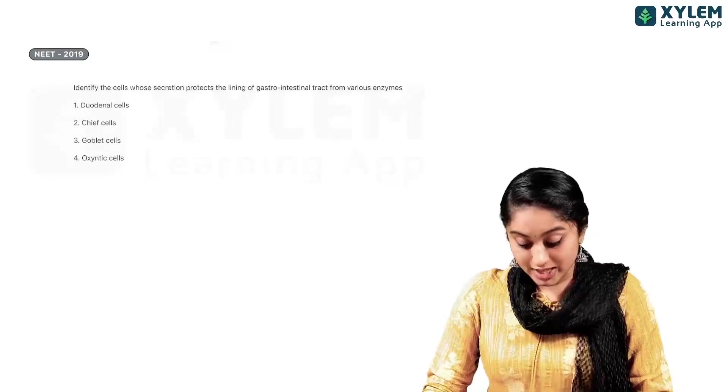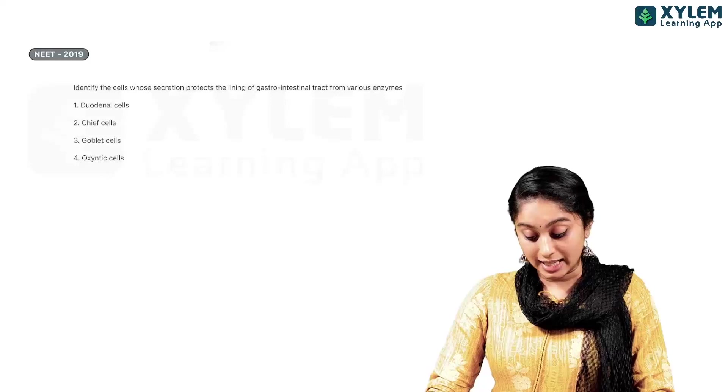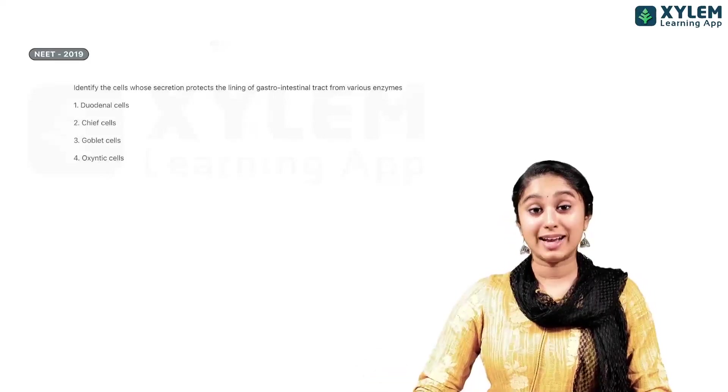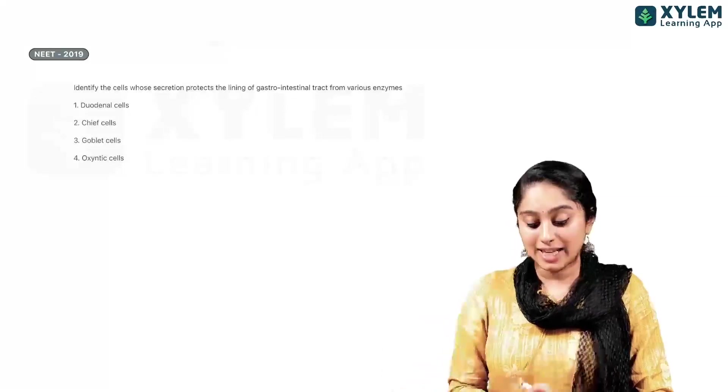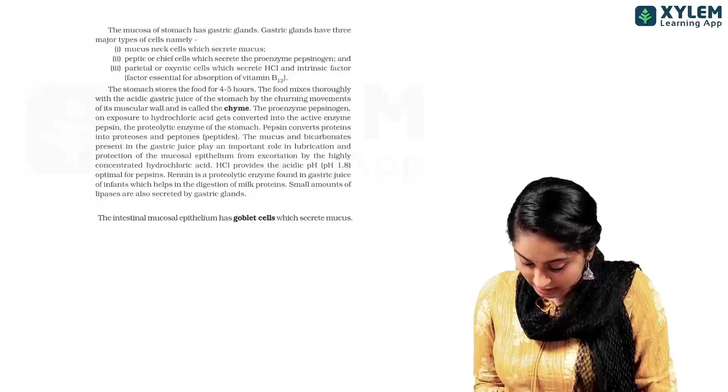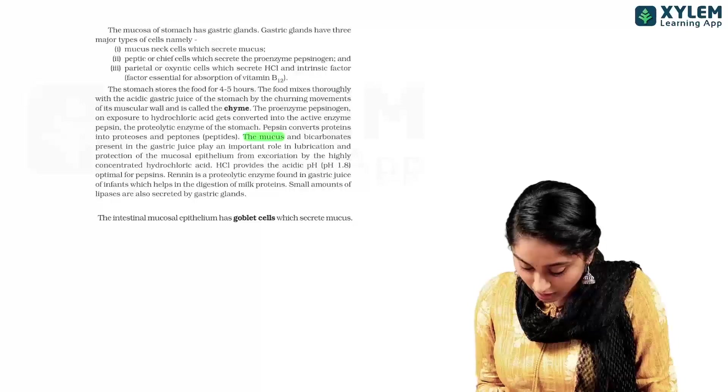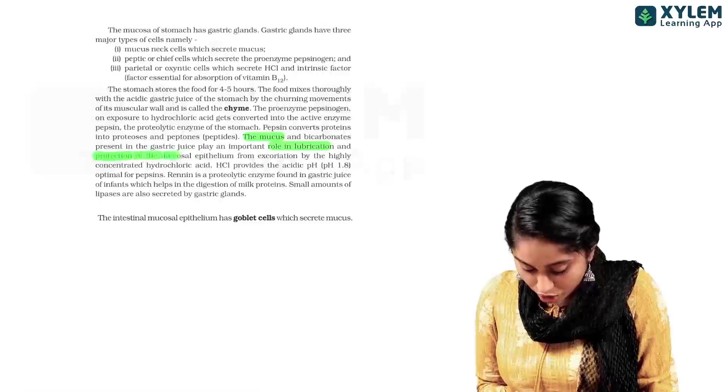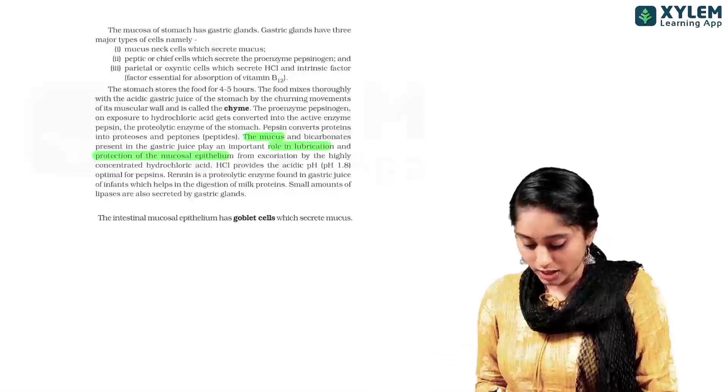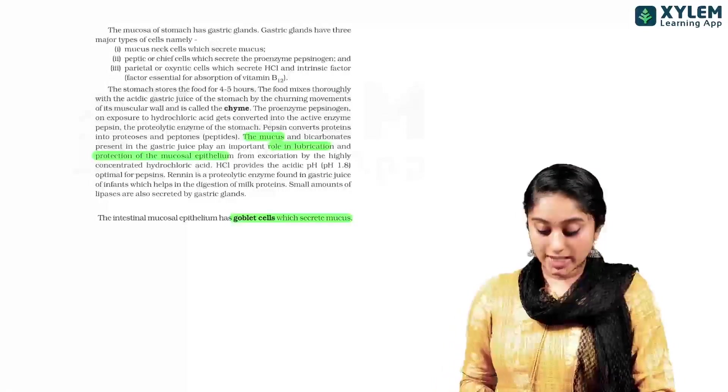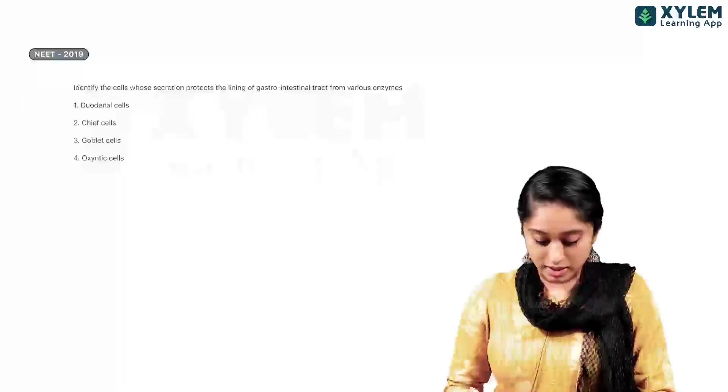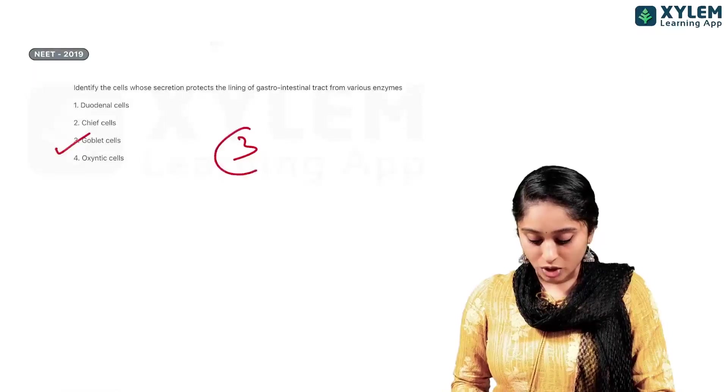Okay. Now, identify the cells whose secretion protects the lining of the gastrointestinal tract from various enzymes. Now, in NCERT, it is not a direct question. If you look at this application, we see that the mucus in the stomach is what helps in lubrication and also protection of the mucosal epithelium. And on the mucus, we see that the goblet cells secrete the mucus. So, mucus helps in protection of the lining. And who is producing the mucus? Goblet cells. So, the answer here will be option 3, goblet cells.